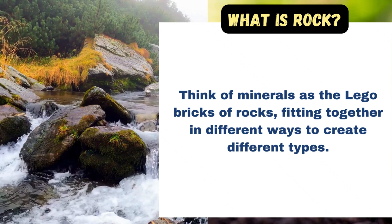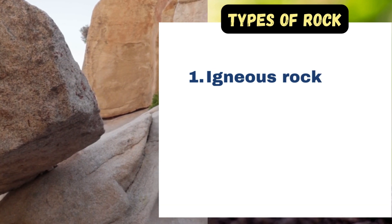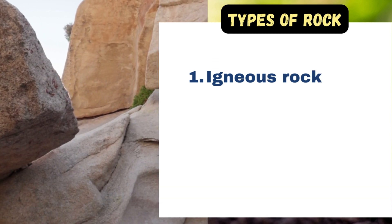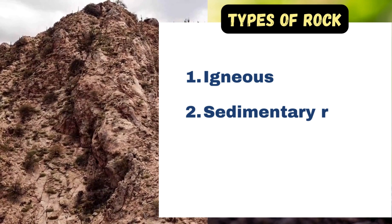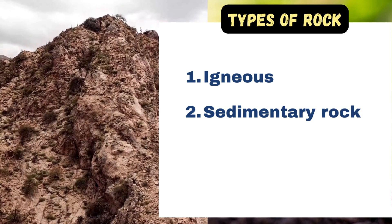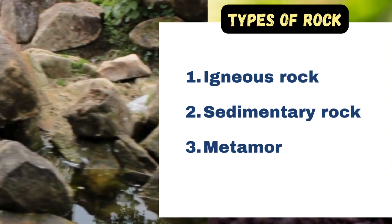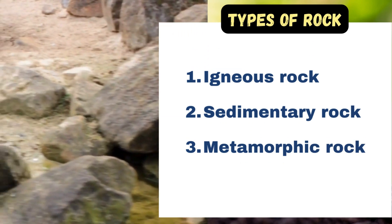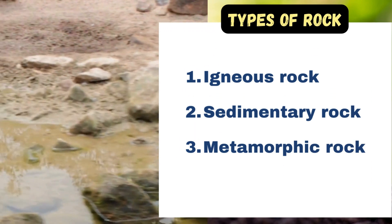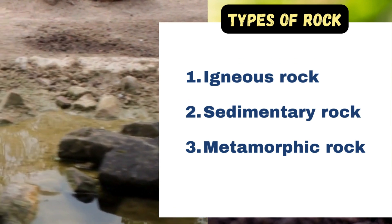There are three main types of rocks. Igneous rock — it is formed from cooled magma or lava. Sedimentary rock — it is formed from the accumulation and compaction of pre-existing rocks. And metamorphic rock — it is formed by the transformation of igneous and sedimentary rocks by heat, pressure, or chemical reactions.